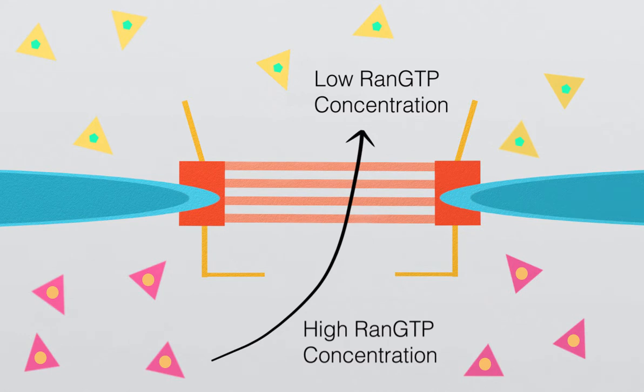Since particles diffuse from areas of high concentration to low, anything bound to RAN-GTP will diffuse out of the nucleus.